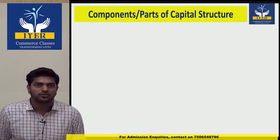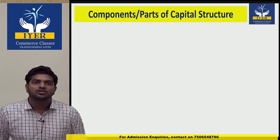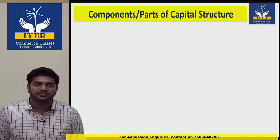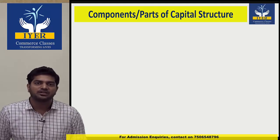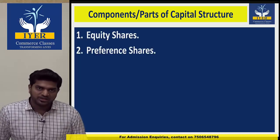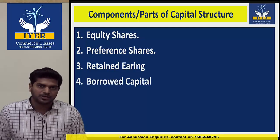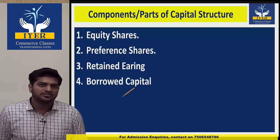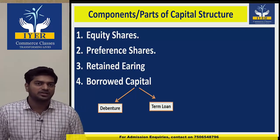If the exam asks 'components' or 'parts' of capital structure, the answer is the same. The components come from our formula: first is equity share, second is preference share, third is retained earning, and fourth is borrowed capital. Borrowed capital is divided into two parts: debenture and term loan.